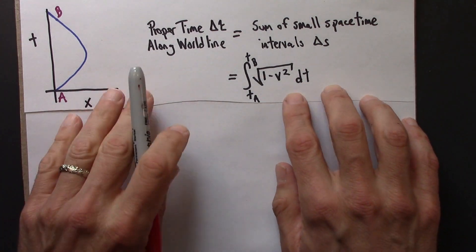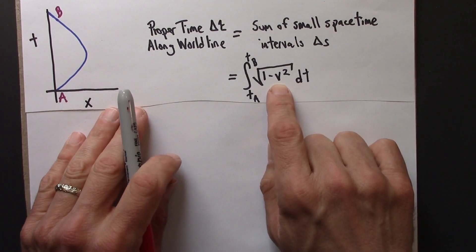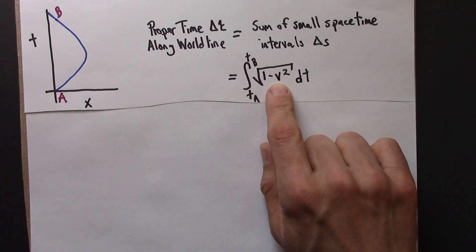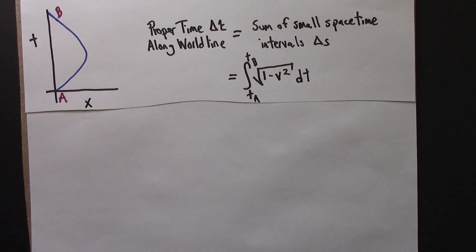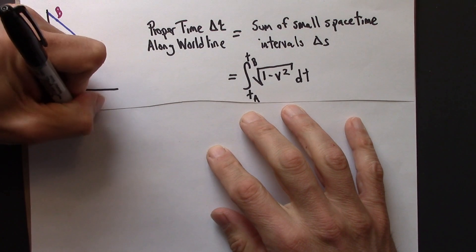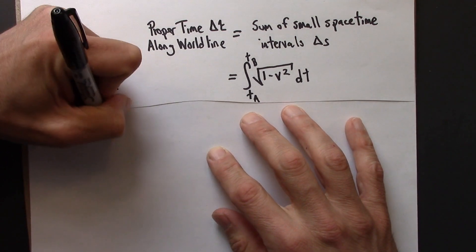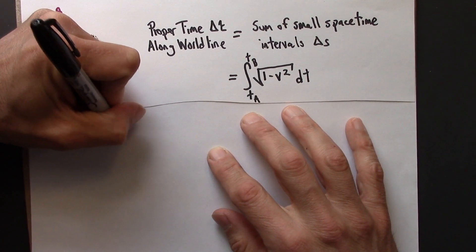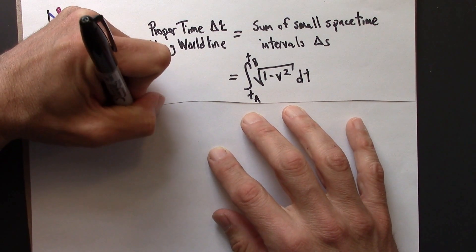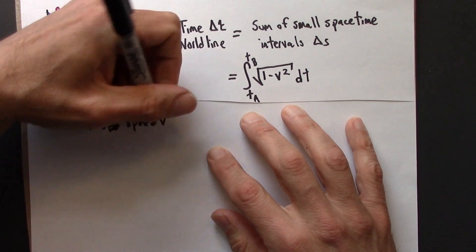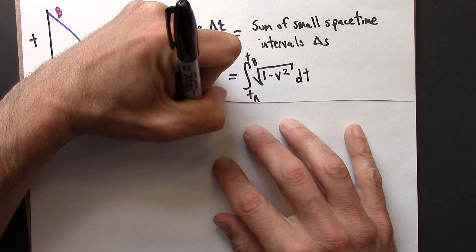Now, in the special case where the speed v is constant, this formula has a much simpler form. So if the speed v is constant, then we have this.